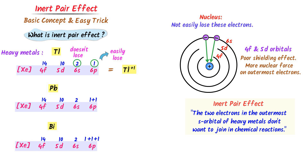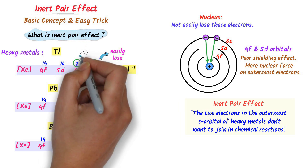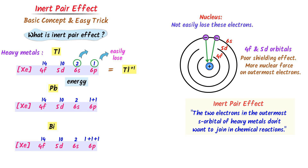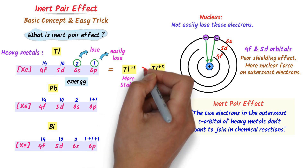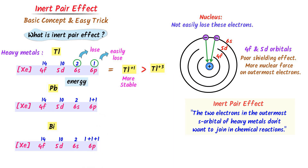Now listen carefully. If we provide some sort of energy to the thallium ion, the nucleus will not be able to further hold the two electrons of 6s. As a result, the two electrons will be lost and we will get the thallium +3 ion. Therefore, the thallium +1 ion is more stable because it is easily formed, while thallium +3 ion is less stable because we need to provide energy.